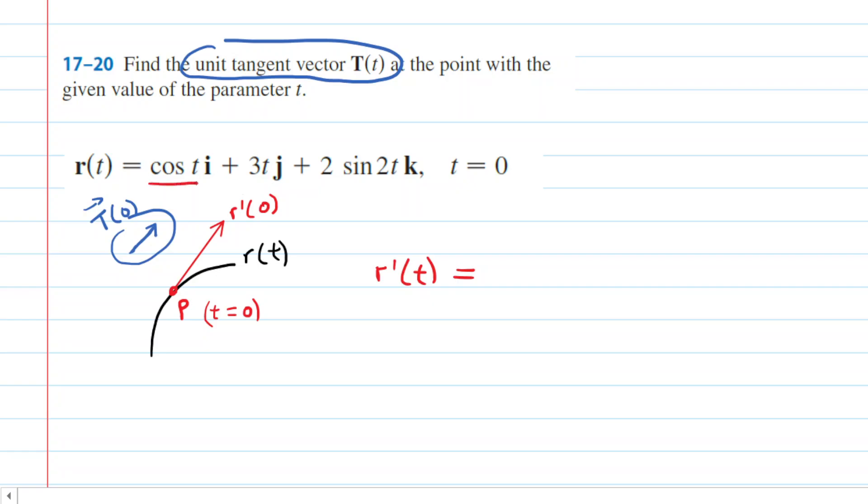So, the derivative of the x component would be the derivative of the cosine of t, which is negative sine of t. The derivative of 3t, which is the y component, is just 3. And then the derivative of the z component. Be a little bit careful here. You have to use chain rule. So, the derivative of sine is cosine. You'd have 2 times cosine of 2t. But then you'd have to multiply by the derivative of the inside function. So, the derivative of 2t is just 2.